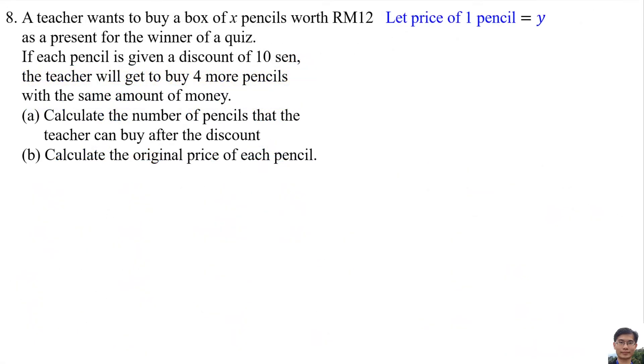Let the price of one pencil equals Y. The price of X pencils is RM12, so Y equals 12 over X. If each pencil is given a discount of 10 cents, the teacher will get to buy 4 more pencils with the same amount of money. Four more pencils, the default number of pencils is X pencils. Four more pencils means X plus 4. A discount of 10 cents means the price of a pencil becomes Y minus 0.1. Same amount of money, RM12, means this expression equals 12.